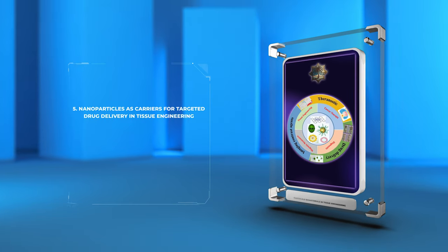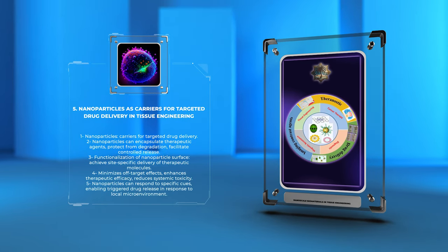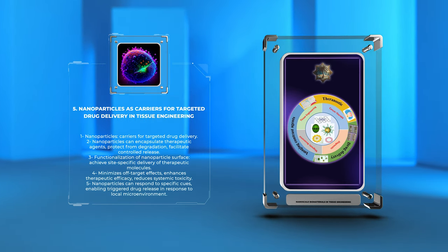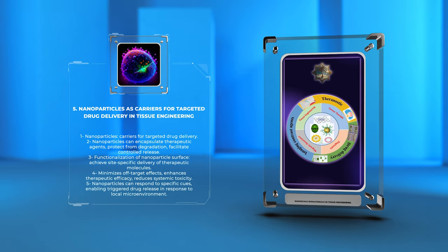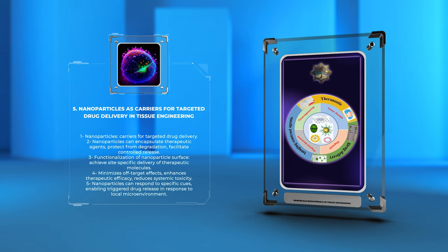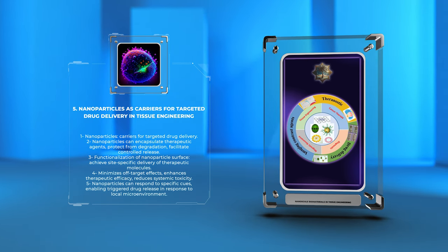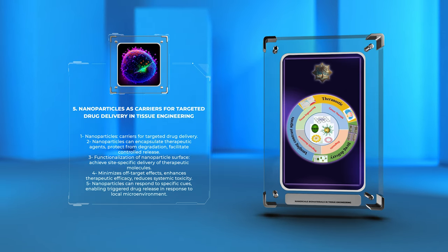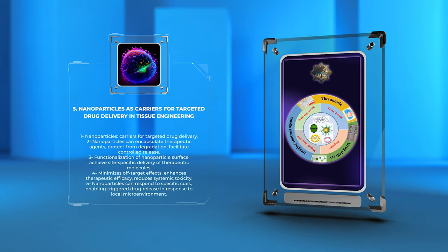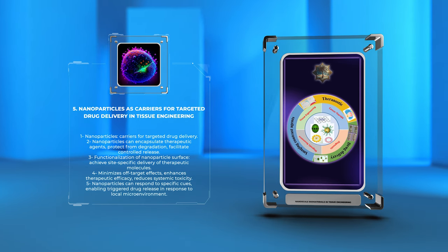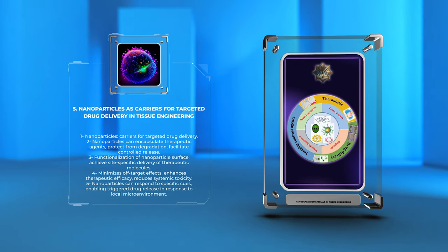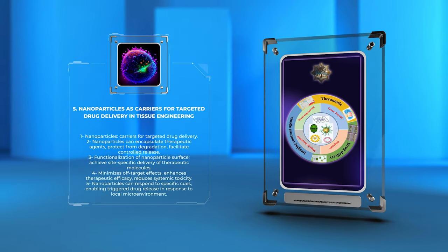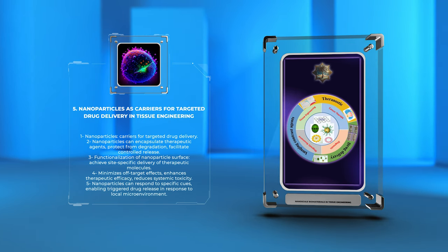One of the key applications of nanotechnology in tissue engineering is the use of nanoparticles as carriers for targeted drug delivery. Nanoparticles can encapsulate therapeutic agents such as drugs, proteins, or nucleic acids, protecting them from degradation and facilitating their controlled release. By functionalizing the surface of these nanoparticles, we can achieve site-specific delivery of therapeutic molecules to the desired tissue or cells. This targeted drug delivery approach minimizes off-target effects and enhances therapeutic efficacy while reducing systemic toxicity. Nanoparticles can also be engineered to respond to specific cues, such as pH or temperature, enabling triggered drug release in response to the local microenvironment. Thus, nanoparticles hold immense potential for revolutionizing drug delivery strategies in tissue engineering.